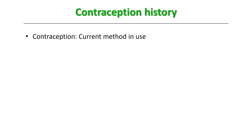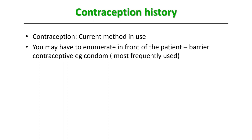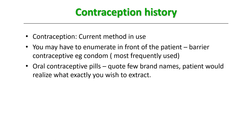Next is contraception history. Ask about the current method being used. You may have to enumerate in front of the patient: barrier contraceptive, for example a condom, which is the most frequently used method in our country; oral contraceptive pills — sometimes they will not understand that term so you have to quote it in Hindi or give popular brand names. You should remember the brand names freely available in government hospitals: Mala D and Mala N — then the patient will realize what exactly you wish to extract.